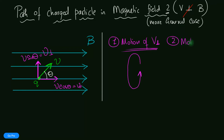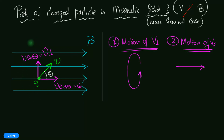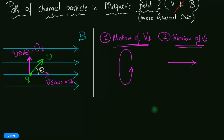Now let's consider the second case: the motion of v parallel. Notice this component is moving parallel to the magnetic field. If a velocity is parallel to the magnetic field, that particle is not going to experience any force at all. So it's just going to keep moving forward — a straight-line motion. So we've decomposed the motion into two components.